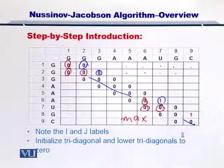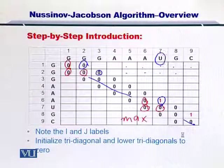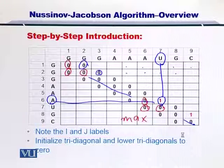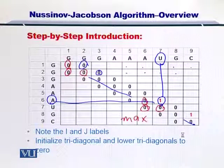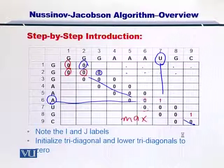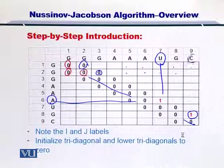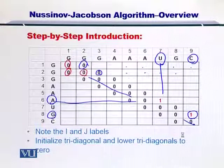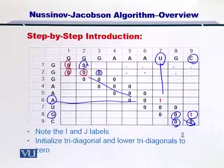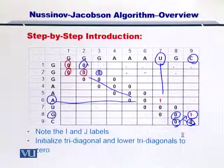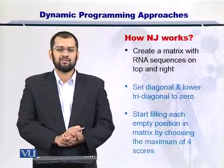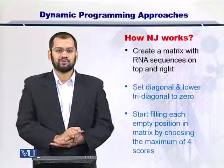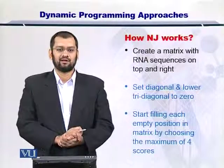Why do we have a one here? The reason is that U can be coupled with an A. This is the pseudo energy given in the equation for the NJ algorithm. Similarly, this is due to the formation of bond between G and C. The diagonal element gives this one because C and G are coupled. In this way, we can create a matrix, put the diagonals to zero, and start filling each position toward determining the secondary structure.